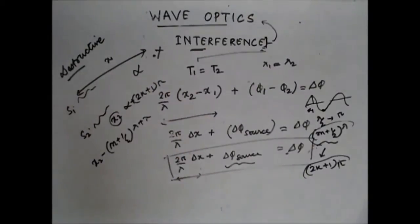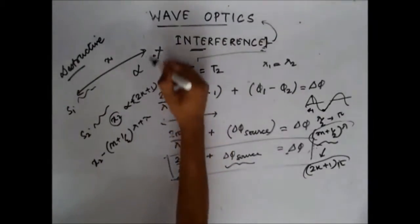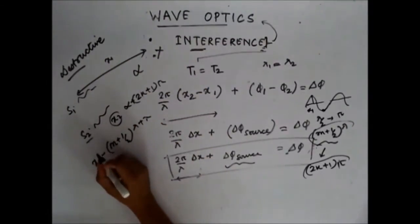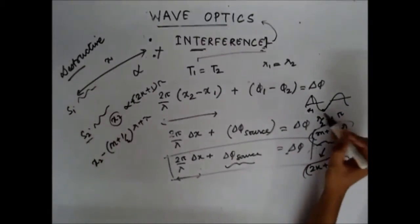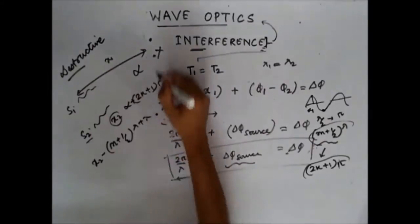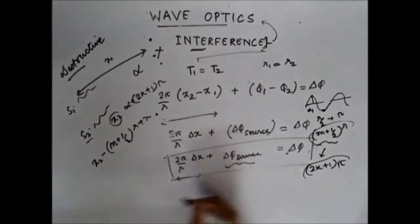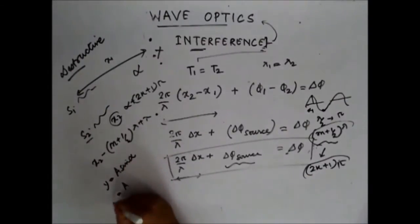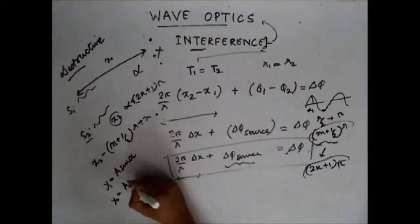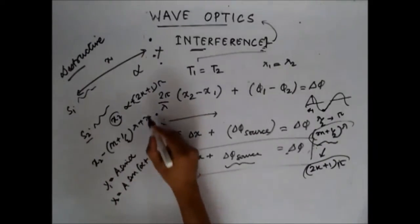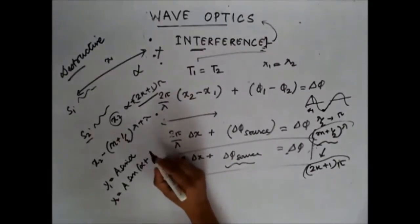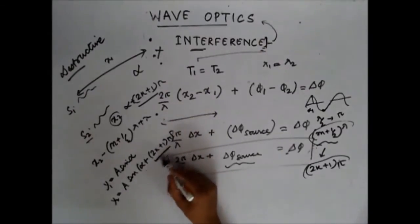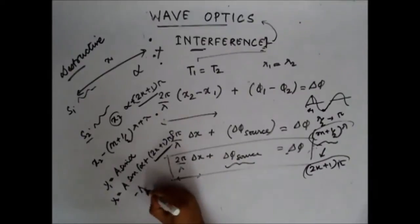When that happens, if S1 has a maxima at this point, S2 will have a minima. Because for S1 I can write sine(alpha), and for S2 I can write sine(alpha + (2k+1)π), since it's (2k+1)π ahead. Sine of alpha plus an odd multiple of pi is always minus sine(alpha).